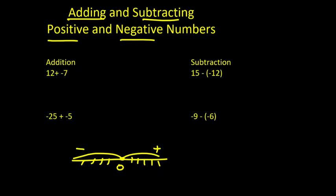First, I'm going to explain how we can add positive and negative numbers. In the example over here, we have positive 12 and negative 7. When we add positive and negative numbers, if the sign of the numbers are the same, we add them. If the sign of the numbers are different — I mean positive and negative — we select the sign of the one which is bigger in value and find the difference between the two numbers.